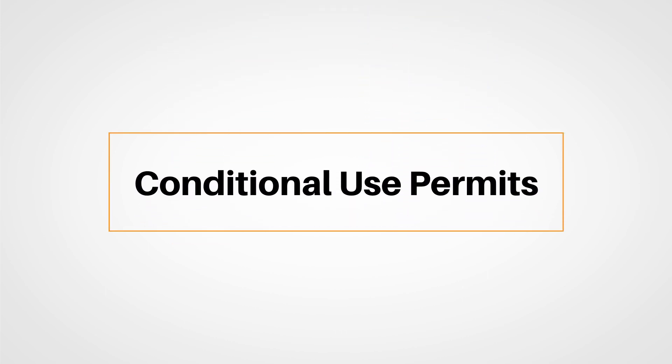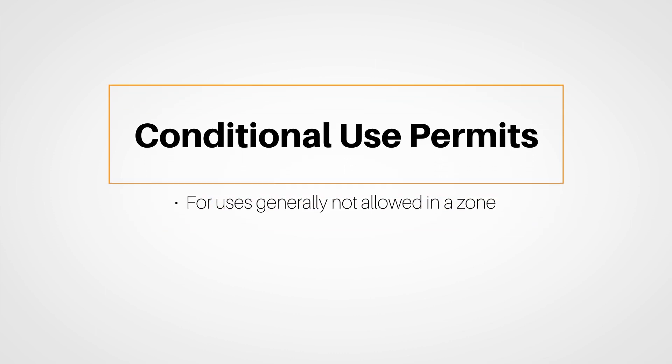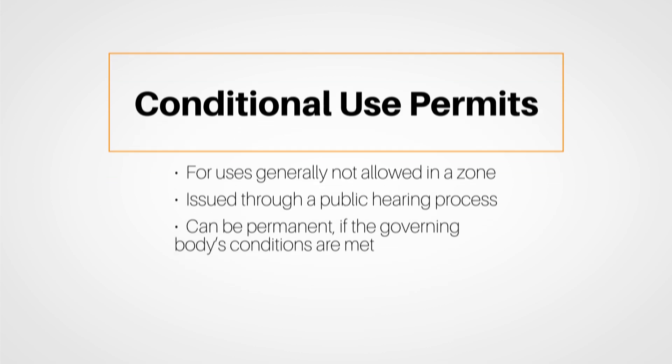Another type, called conditional use permits, are issued by municipalities for use generally not allowed in a zone, and they're usually issued through a public hearing process. Conditional use permits can be permanent, as long as the governing body's conditions are met.